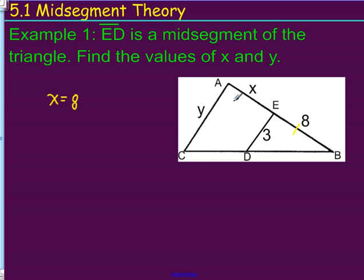So, if this is congruent to this, and this is 8, if EB is 8, then AE, which is X, should be 8.